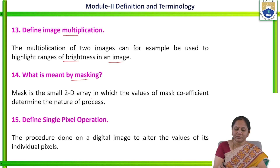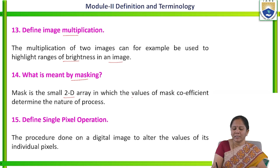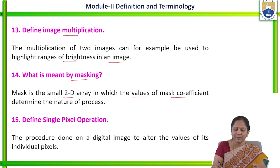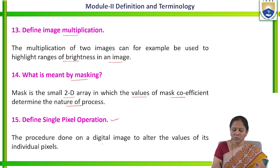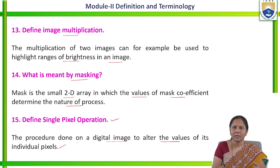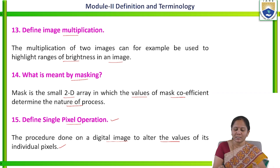What is meant by masking? A mask is a small two-dimensional array consisting of some values. Those values can be called mask coefficients, which determine the nature of the process. Define single pixel operation: if any procedure is applied on the image and it is done to alter the value of the individual pixel, then it is called single pixel operation — that means the operation is performed on a single pixel in the image.